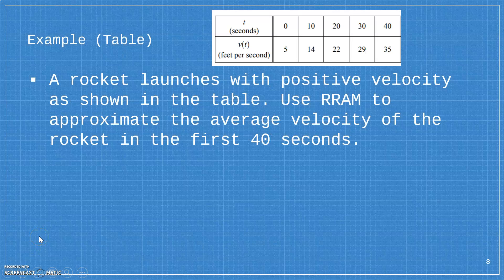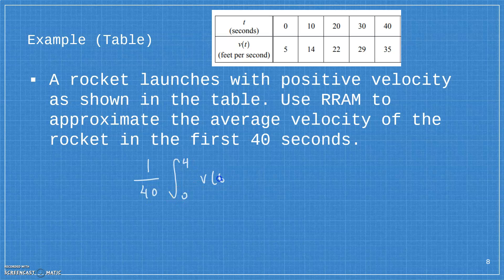And then the other way we could do average value of a function is if we're given a table of data. If we're given a table of data, the way we'll calculate the integral is with an approximation method. So if I'm using RRAM and I want to know the average velocity for 40 seconds, so I'm going to divide by 40 and I'm going to go from 0 to 40 of this velocity function. I'm going to take an interval of 10 with a height of 14. So I'll do 1 40th times 10 times 14 plus 10 times 22 plus 10 times 29 plus 10 times 35.